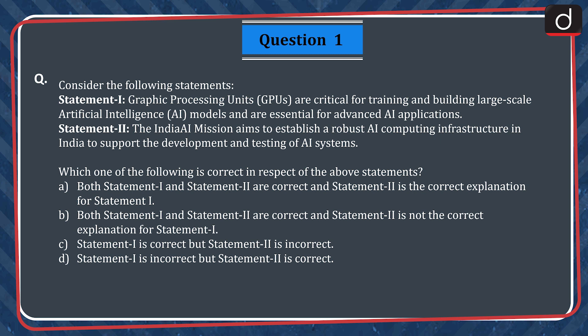A. Both Statement 1 and Statement 2 are correct, and Statement 2 is the correct explanation for Statement 1. B. Both Statement 1 and Statement 2 are correct, and Statement 2 is not the correct explanation for Statement 1. C. Statement 1 is correct but Statement 2 is incorrect. D. Statement 1 is incorrect but Statement 2 is correct.